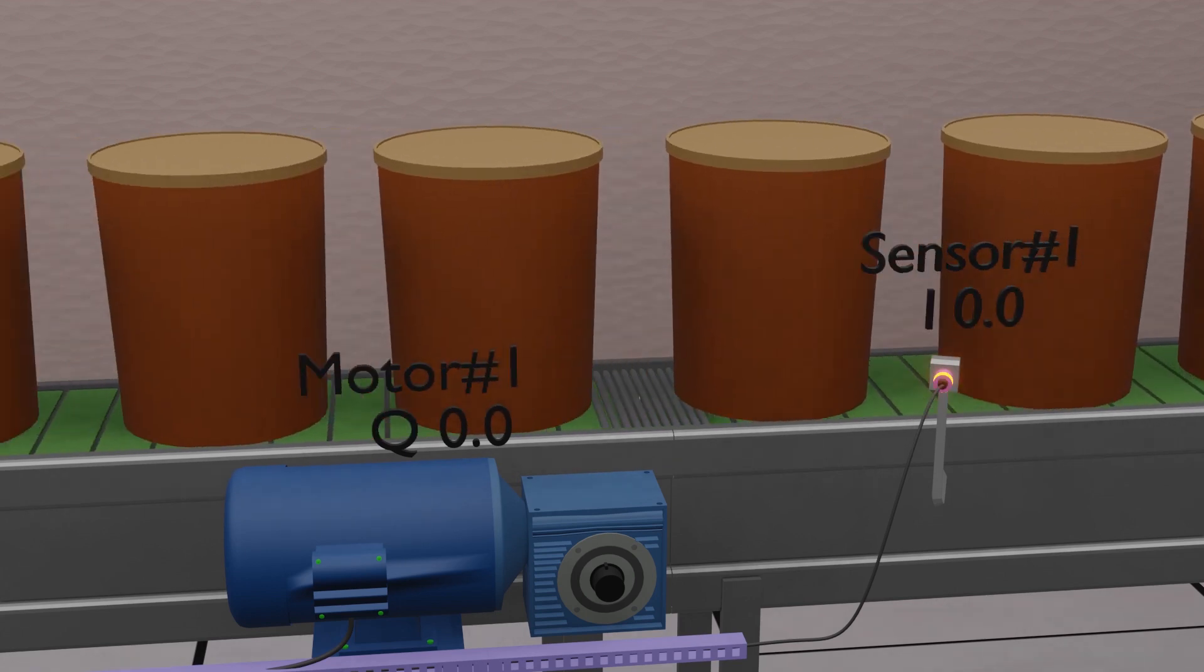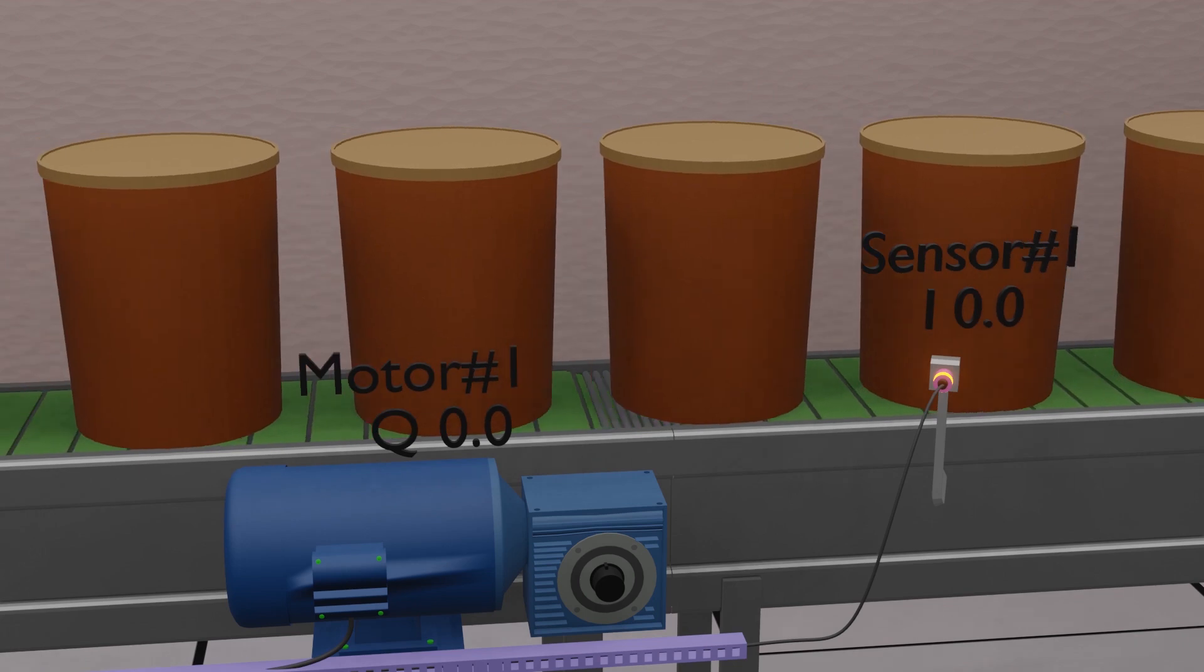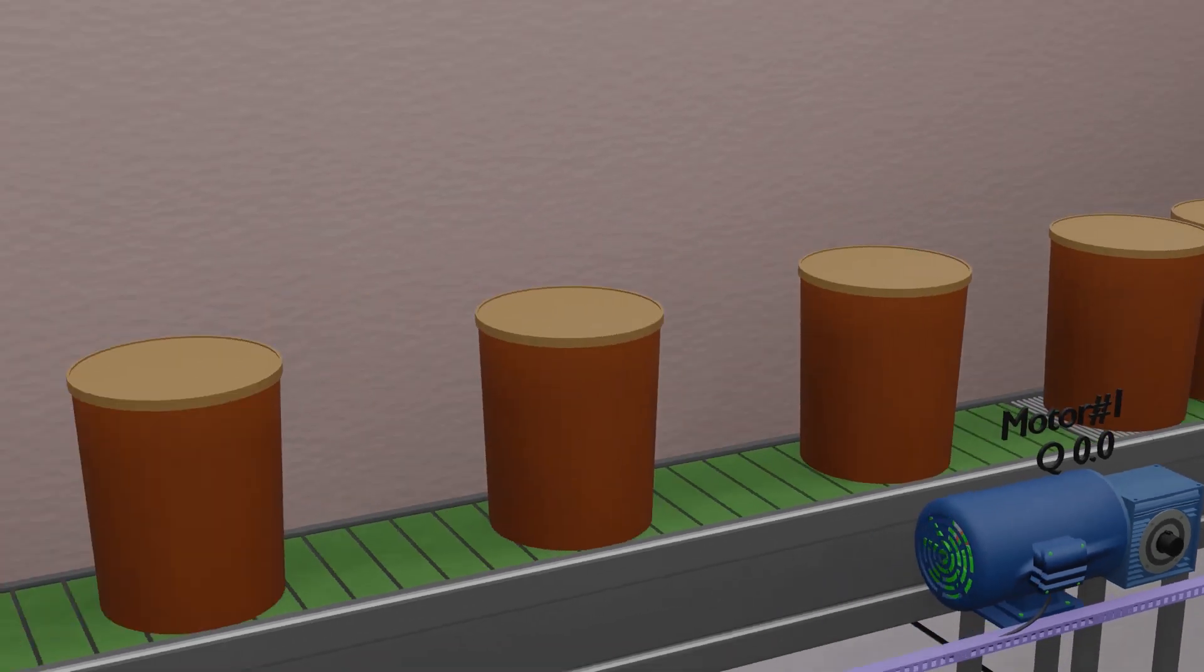Next, we have a backup conveyor. This conveyor will be driven by a motor connected at Q 0.0 PLC output.